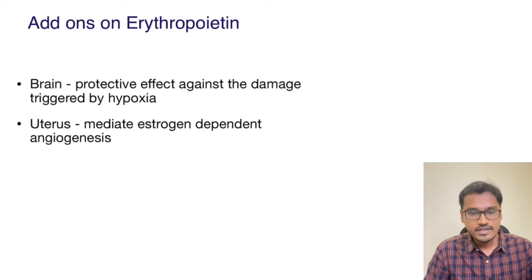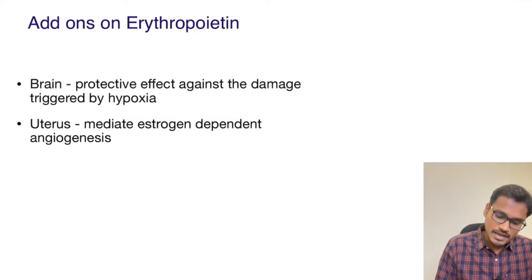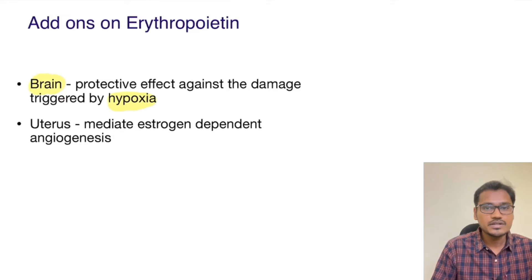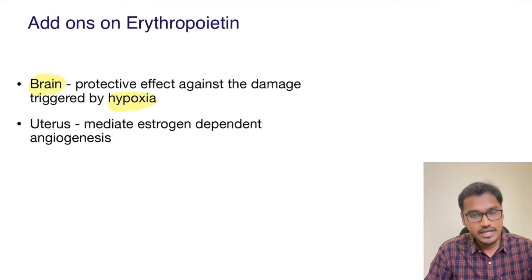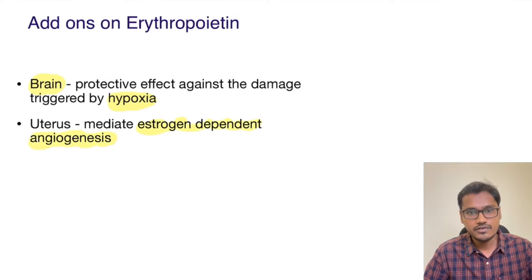As an add-on: erythropoietin is most exclusively produced in the kidneys, but it is also present in the brain where it has a protective effect against damage triggered by hypoxia. It is also produced by the uterus, where it has a mild estrogen-dependent angiogenesis role — the uterus may have a severe need for angiogenesis during pregnancy, and erythropoietin stimulates that process.